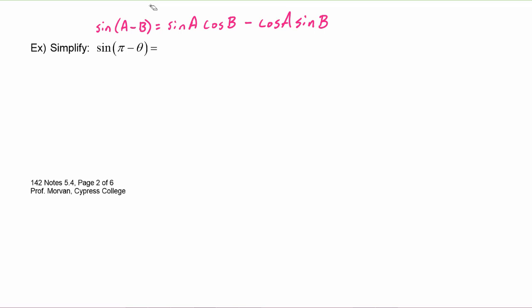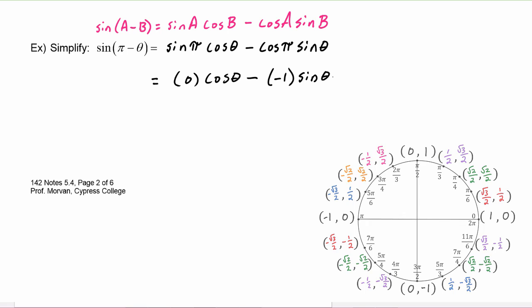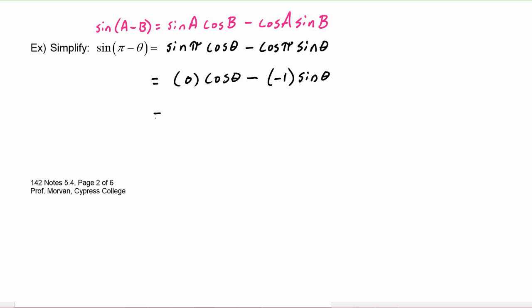Applying the difference identity for sine to sine of (π minus θ), we get sine of π times cosine of θ, minus cosine of π times sine of θ. Sine of π is zero, and cosine of π is negative one. When we simplify, we get sine of θ. So it turns out that sine of (π minus θ) equals sine of θ.